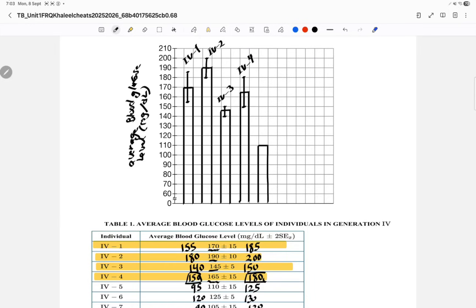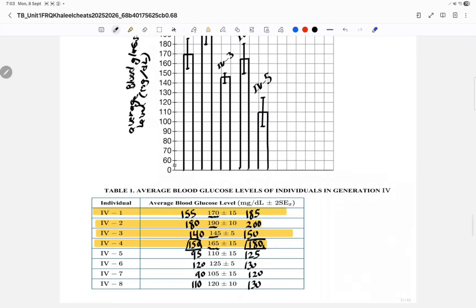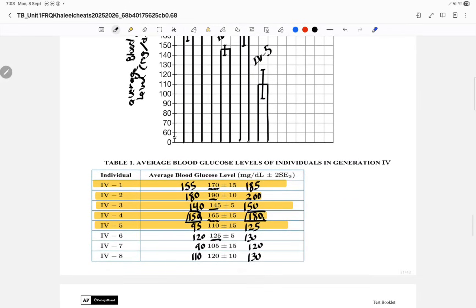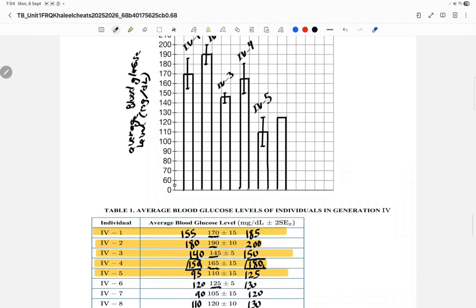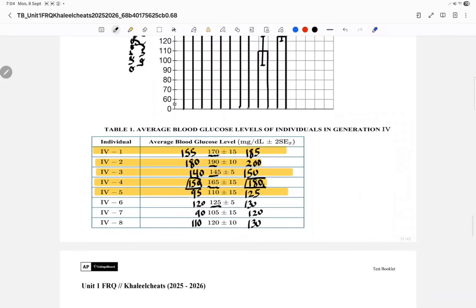Now IV5 is going to be at 110. How many IV levels do we have again? Eight. I'm going to be extending from 95 to 125. That's going to be IV5. Now the sixth row, IV6 at 125, so that's going to be right here. It's going to extend from 120 to 130.